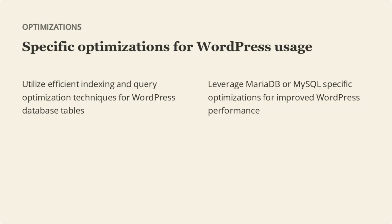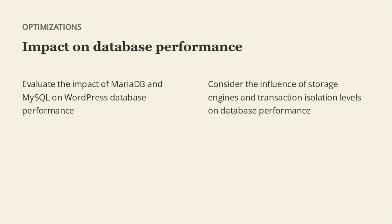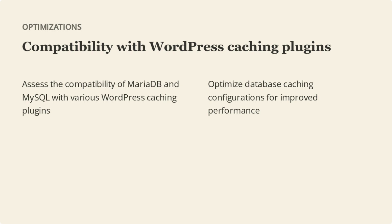To optimize WordPress database performance, it is essential to implement efficient indexing and query optimization techniques. Both MariaDB and MySQL offer specific optimizations tailored for improved WordPress performance. We'll also evaluate how different storage engines and transaction isolation levels influence database performance, and explore how MariaDB and MySQL are compatible with various WordPress caching plugins to optimize database caching configurations, leading to improved website speed and responsiveness.